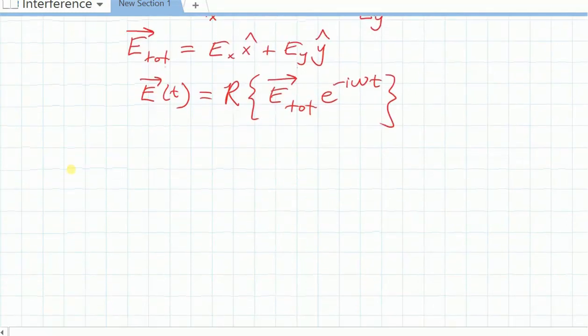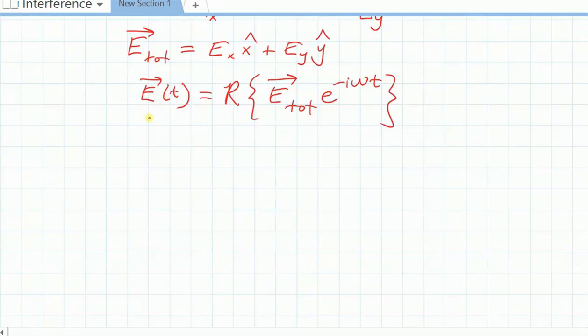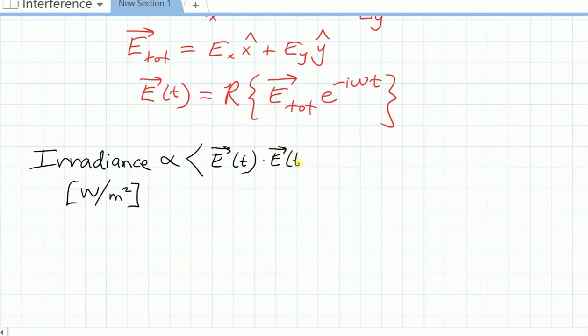Now, what's the irradiance of some electric field like this? Let's make sure that's clear. This is a concept that you certainly encountered in your interference and diffraction class. So irradiance, which is in something like watts per meter squared, that's proportional to e of t times itself time averaged. The irradiance is proportional to the time average of the electric field squared.